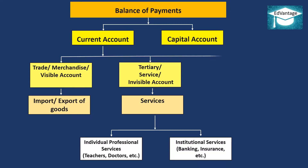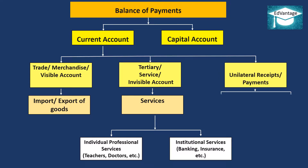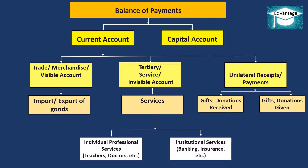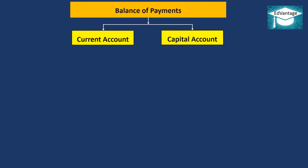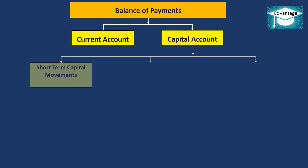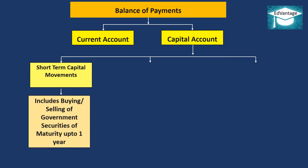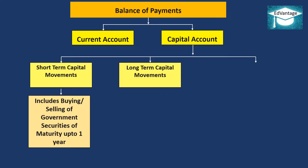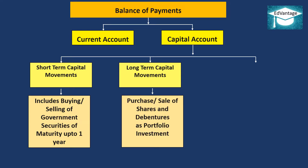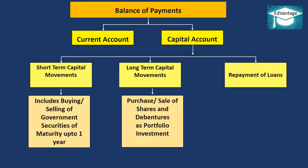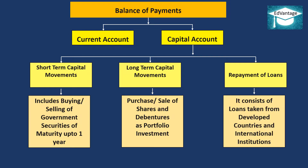The current account also includes unilateral receipts or payments, that is gifts and donations received and given. The capital account is divided into three: short-term capital movements, which includes buying or selling of government securities of maturity up to one year; long-term capital movements, which includes purchase or sale of shares and debentures as portfolio investment; and repayment of loans, which consists of loans taken from developed countries and international institutions.